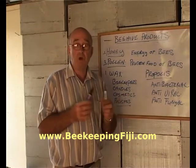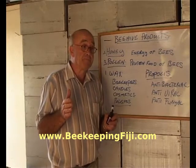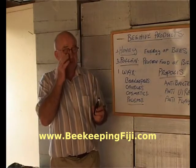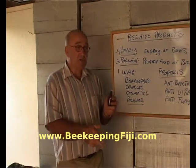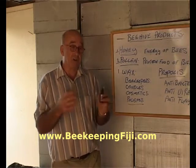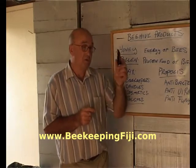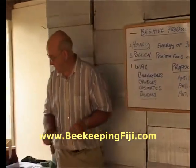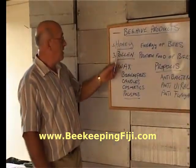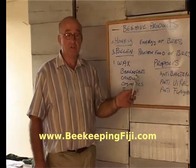We buy the raw propolis material from the hives at about $80 a kilogram. So it's another by-product that beekeepers can get from their hives, apart from honey. They can save their wax and scrape the surplus propolis from their hives and bring that in for sale. We can then process it into a product used for human consumption. So honey, pollen, wax, and propolis are the main products of the hive.